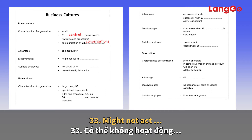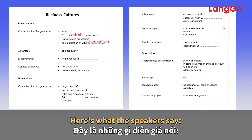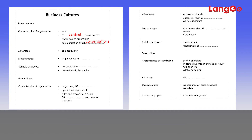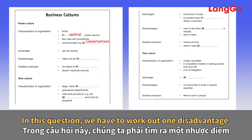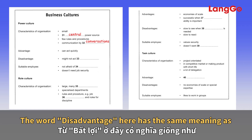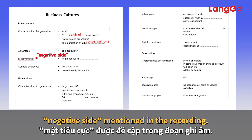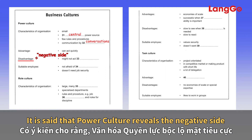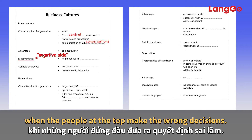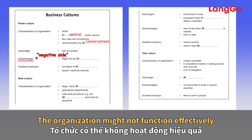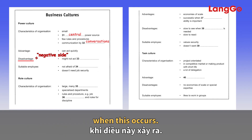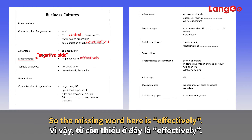Question 33 — might not act effectively. The speaker says: on the negative side, this type of organization doesn't always act effectively because it depends too much on one or two people at the top. The word 'disadvantage' has the same meaning as 'negative side' in the recording. When people at the top make wrong decisions, the organization might not function effectively, so the missing word is 'effectively'.